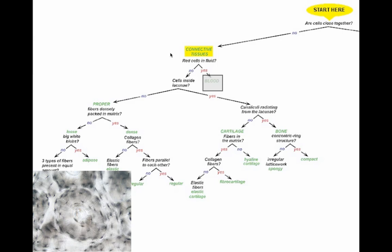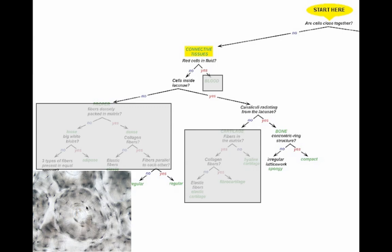The next question: Are the cells inside lacunae? Lacunae means crater. And it's easier to see when it's not so small. But these cells are actually inside little teeny depressions that we call lacunae. And you can usually see those. So the answer to that question, are they sitting in little craters? The answer is yes. Are there canaliculi radiating from the lacunae? Canaliculi means little canals. And those are all the little lines that you see here coming out of the cells inside the lacunae. So the answer is yes, you do see those.